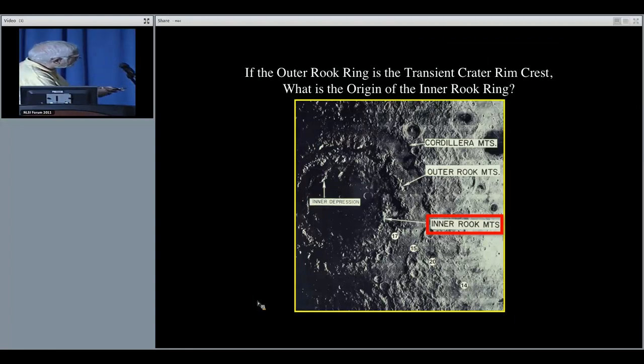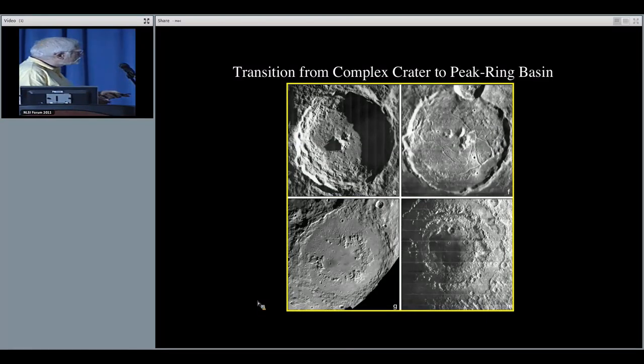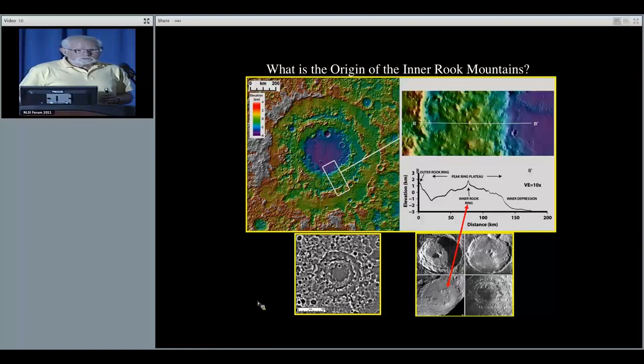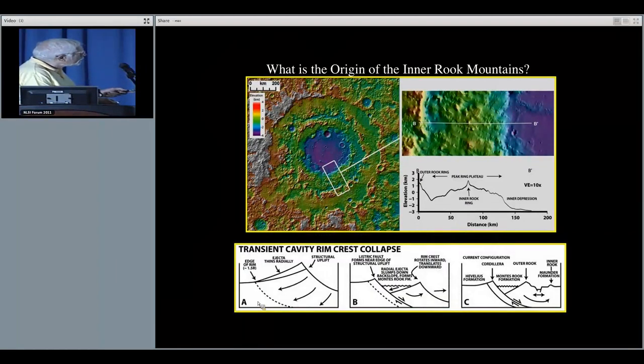If indeed the outer Rook ring is a transient cavity rim crest, what's the origin of the inner Rook ring, this peak ring-like feature? The characteristics of these basins strongly suggest that there's variations in there that link them to the kinds of things we see in the smaller basins. The peak ring is very similar to the peak rings that we see in peak ring basins. The topography here amply illustrates that. We interpret that to be the next stage which corresponds at the same time to the collapse of the rim of the basin itself. As the rim is collapsing here, the basin is uplifting in the center and the edge of the peak rings is uplifting to form the plateau on which the peak rings formed themselves that are observed today.